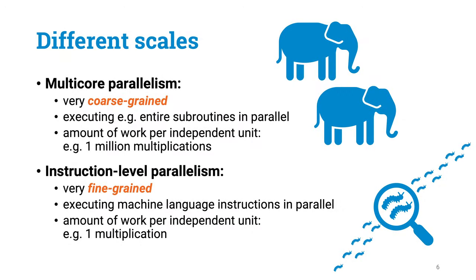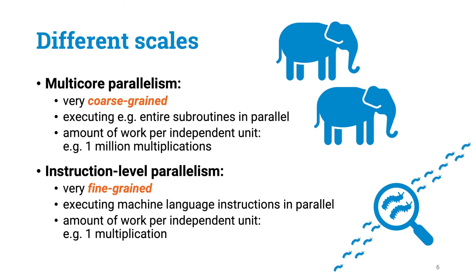It is important to note that these forms of parallelism concern very different scales. For example, in multi-core parallelism, the threads execute a large number of operations — perhaps millions or billions of operations — while in instruction-level parallelism we might be concerned about parallelizing just a handful of operations somewhere in the most critical part of the innermost loop.